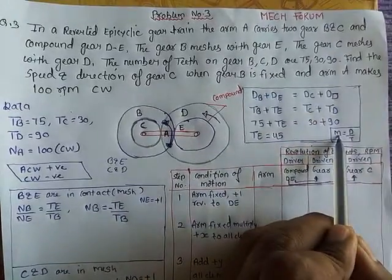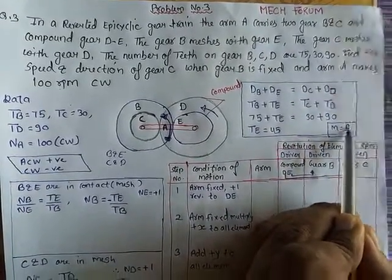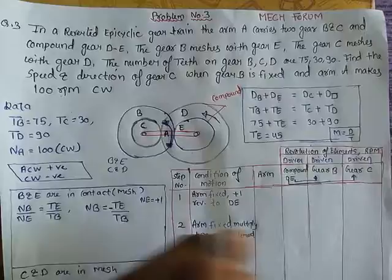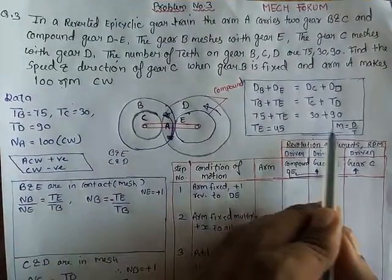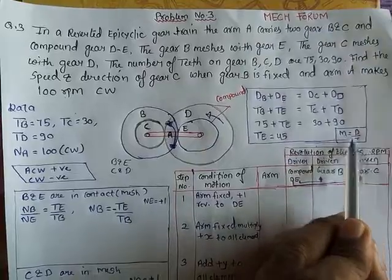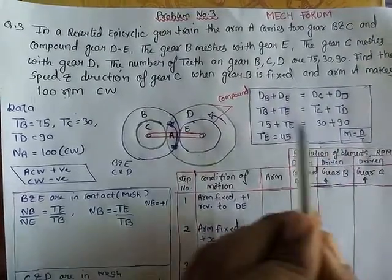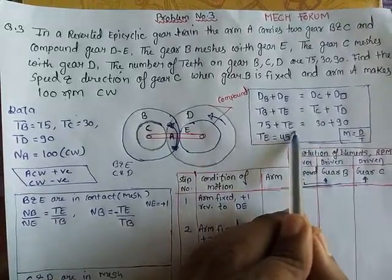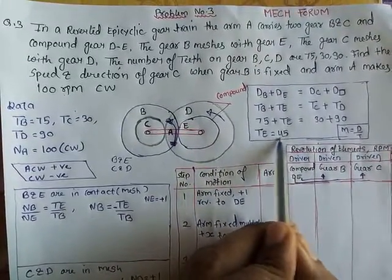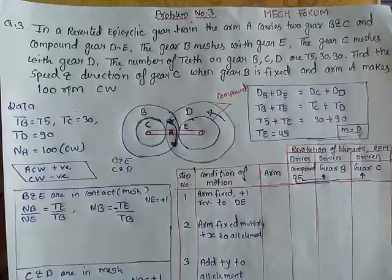As we know, module is D by T, module into number of teeth. Now we have to make sure of all the gears. As we can see, the gears are in proper meshing, so the module is the same, the diametral pitch, the number of teeth. The unknown is TE.